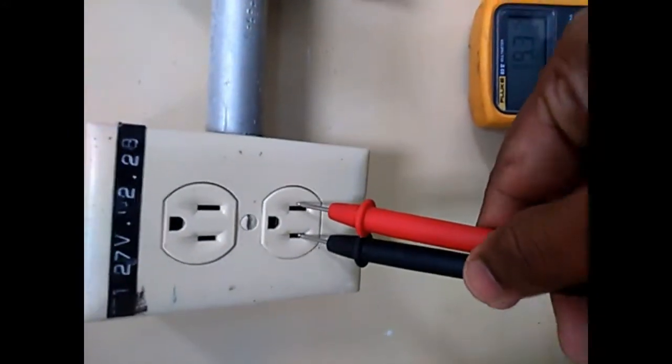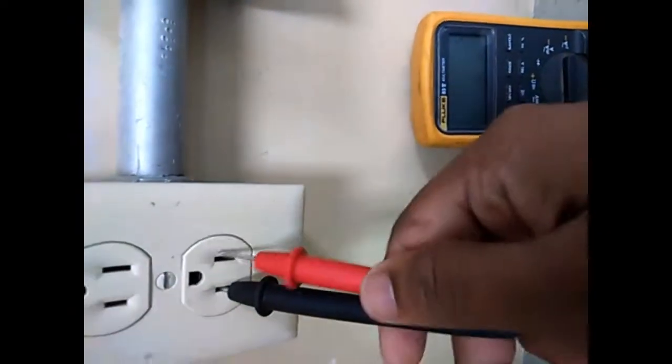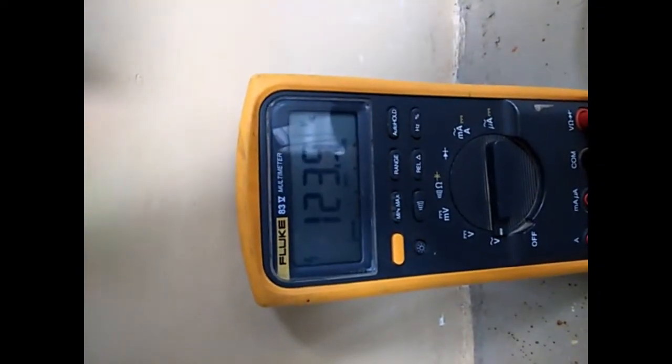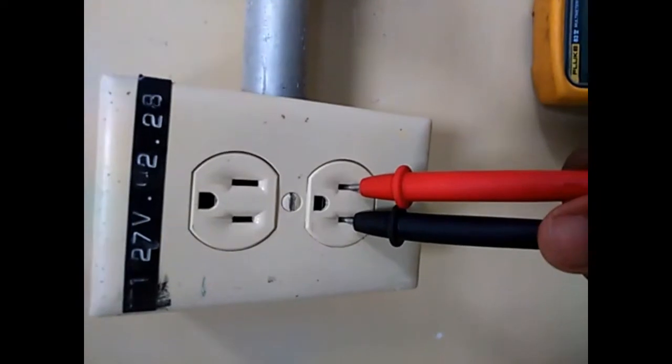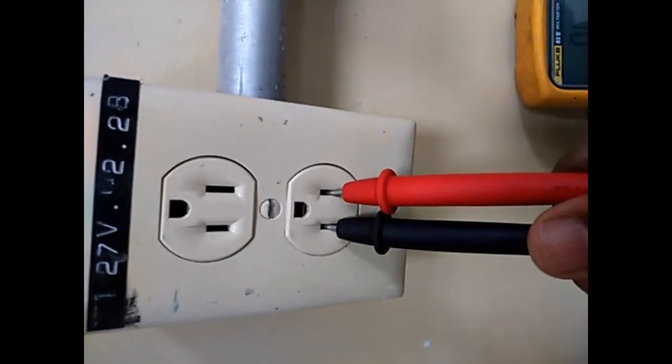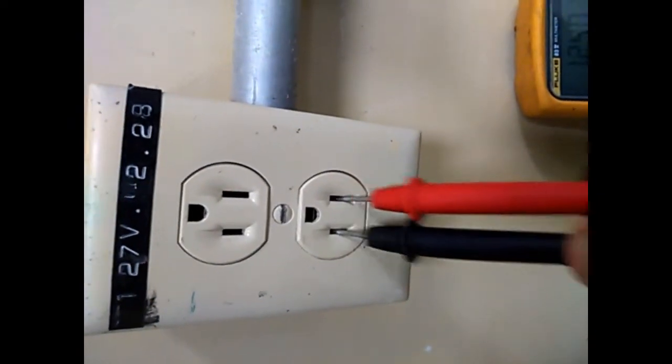I will use this socket. You can see that it shows 110V on the 120V socket. Now I am removing this one, and the multimeter will be zero.